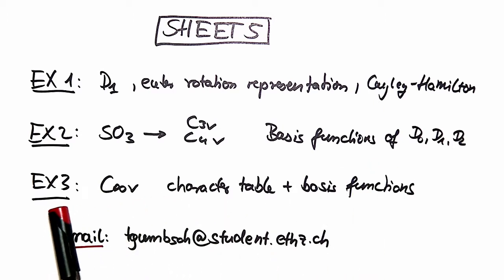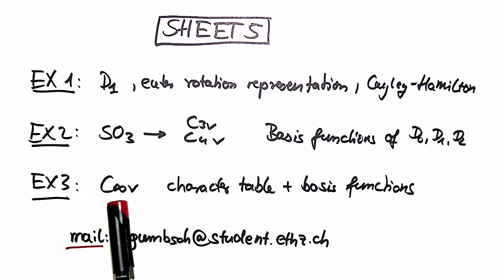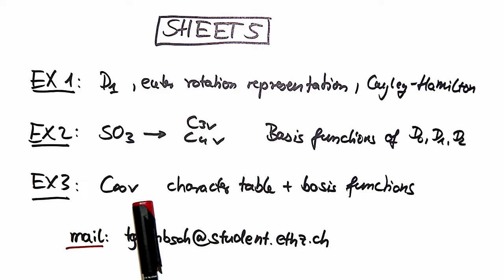And the last exercise, and I really recommend you to watch them in this order, is to look at the character table of C∞v. We already did the character table of C∞, and you should be familiar with that because I go fast-paced on the first part. And then I will distribute the basis functions of these three guys over here in the irreducible representations of C∞v.